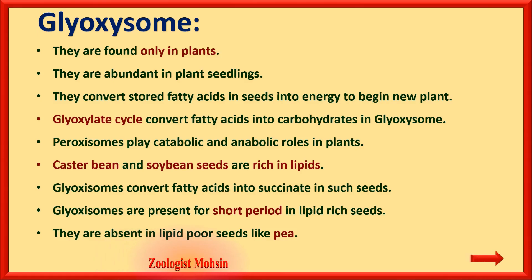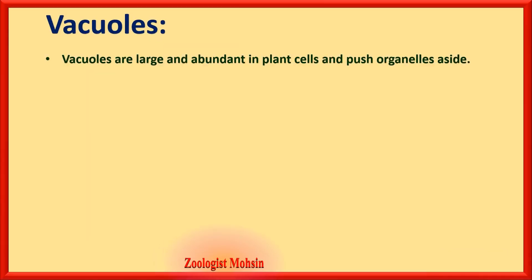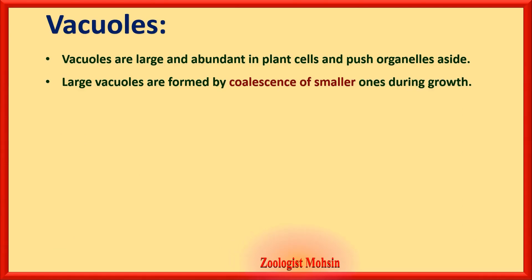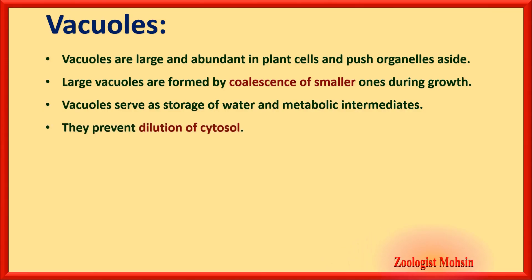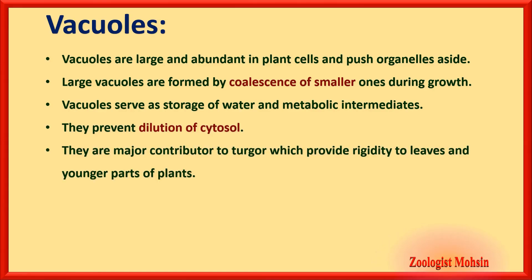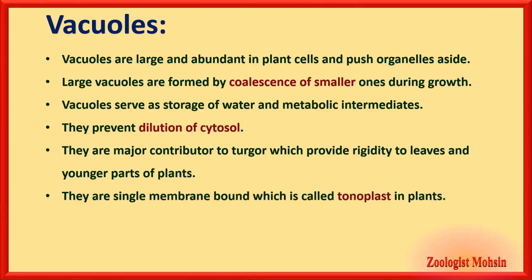Vacuoles are large and abundant in plant cells and push organelles aside. Large vacuoles are formed by fusion of smaller ones during growth and development. Vacuoles serve as storage of water and metabolic intermediates, and prevent dilution of the cytosol. They are a major contributor to turgor, which provides rigidity to leaves and younger plant parts. Vacuoles are single membrane-bound; that membrane is called the tonoplast.